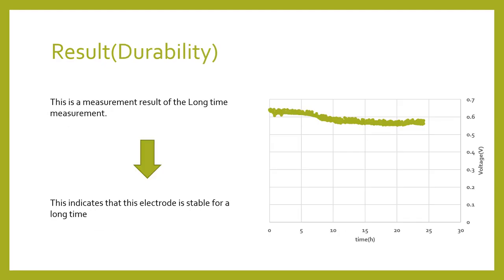This is the measurement result of the long-time measurement. You can see that aluminum air battery using buckypaper generates electricity for about a day. This indicates that this electrode is stable for long-time.